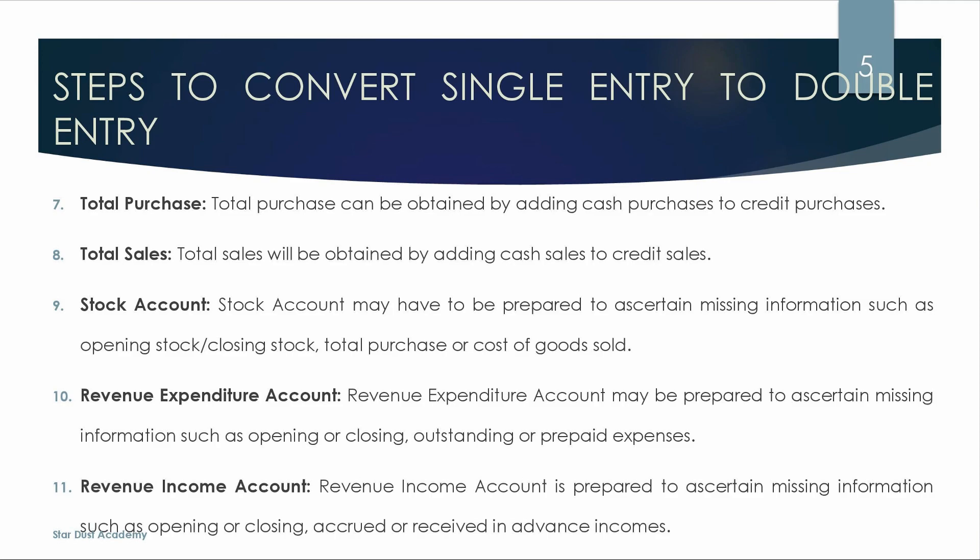Next is Total Purchase. Total Purchase can be obtained by adding Cash Purchase to Credit Purchase. Cash Purchase is from cash book. Next is Total Sales. Total Sales — we will get cash sales and credit sales.